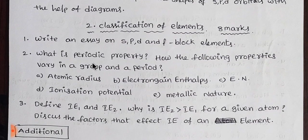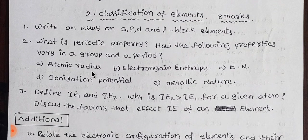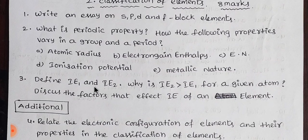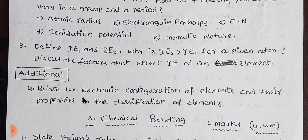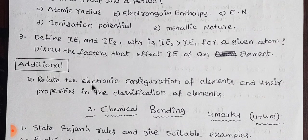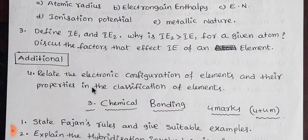Next, the second lesson is classification of elements. You can see three important short answer topics. The first one is SPDF blocks. The next one is periodic properties: atomic radius, electron gain enthalpy, electronegativity, ionization potential, and metallic character — three properties. The third one is definitions of IE1 and IE2, and why IE2 is greater than IE1 for a given atom, and factors that affect IE of an element.